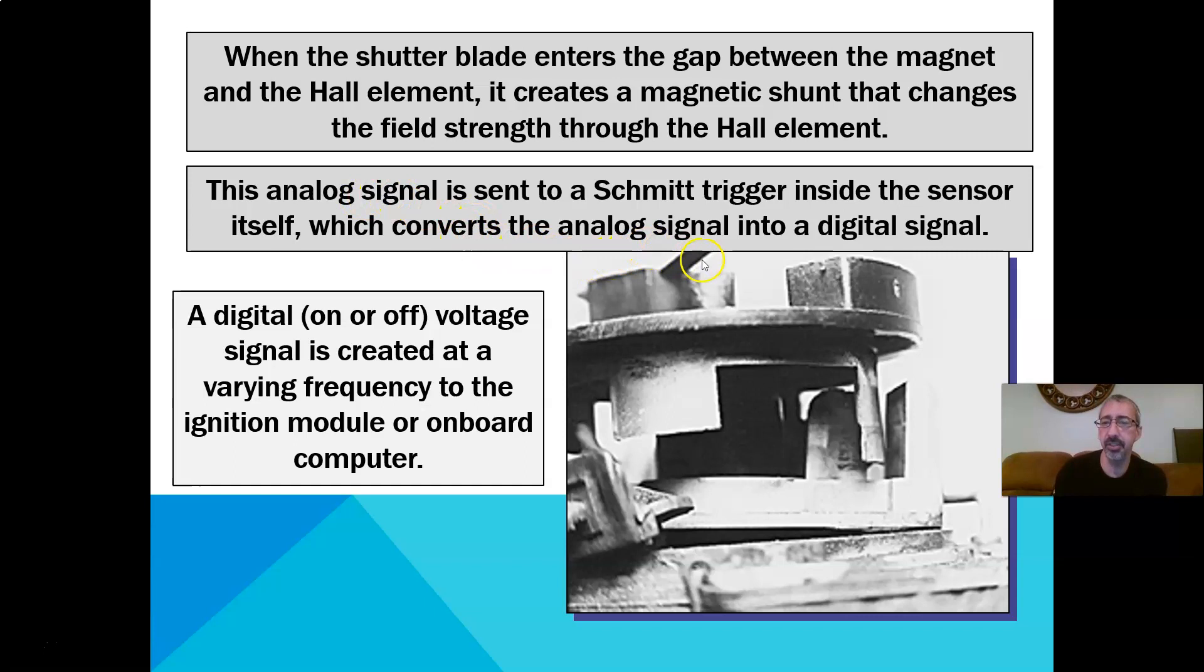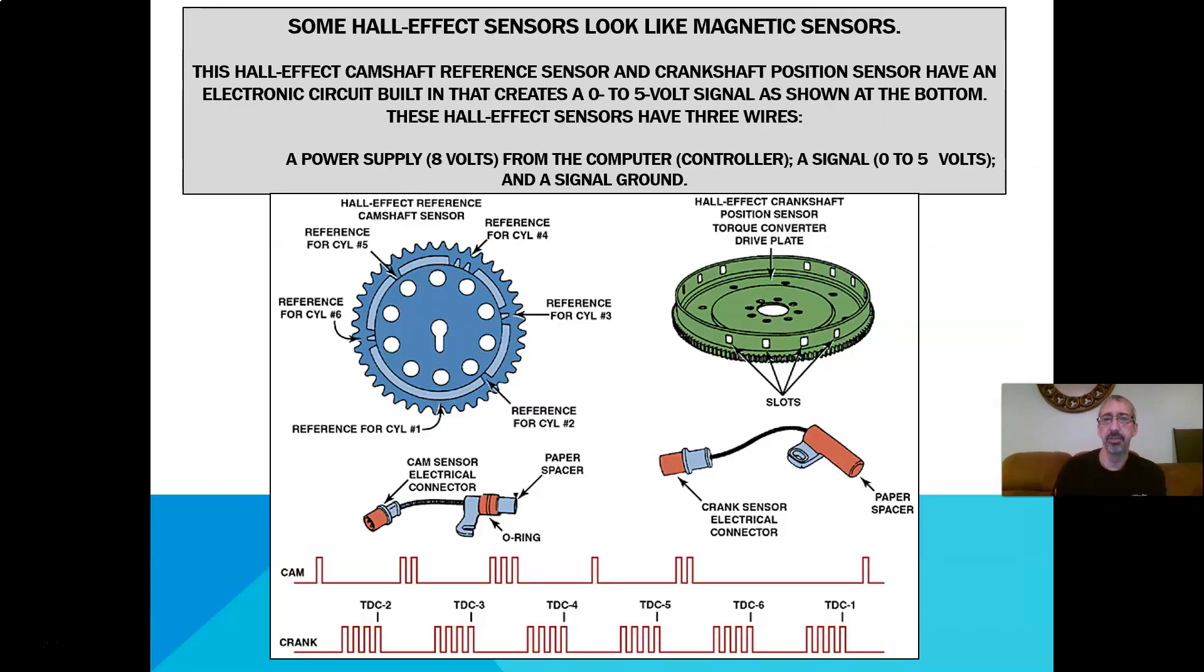A lot of cars have a combination of both. The Hall effect camshaft reference sensor and crankshaft positioning sensor have an electronic circuit built into that that creates a zero to five volt signal as shown below. These Hall effect sensors are three wire sensors.